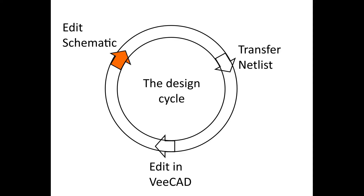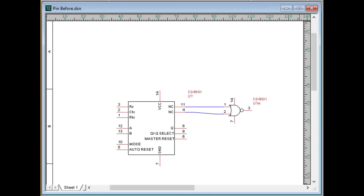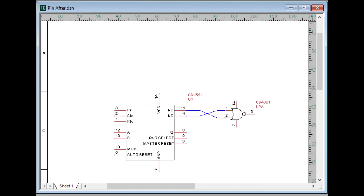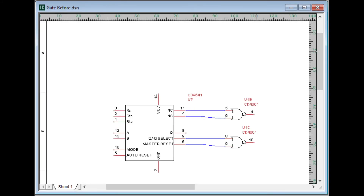Returning to the schematic creates a design cycle. Use the design cycle to correct mistakes, to record changes to prototypes, to get a cleaner layout with pin swap, to get a cleaner layout with gate swap. Let's go back to the microprocessor.